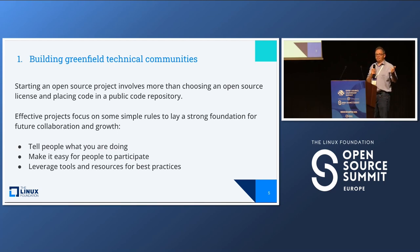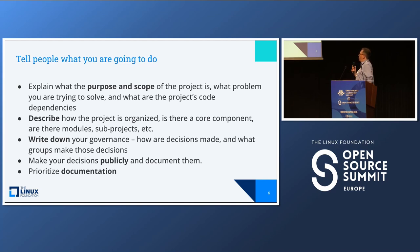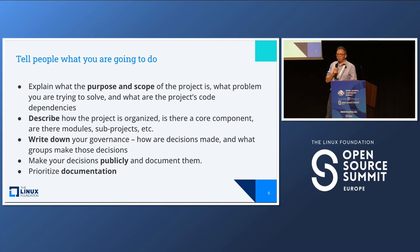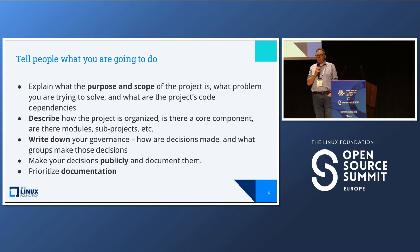First: tell people what you're doing. It sounds simple, but focusing on doing that in an easy and direct manner can be very helpful. Second: make it easy for people to collaborate. Third: leverage tools and resources for best practices. On telling people what you're going to do — explain the purpose and scope of the project. Have a README file in the repo that sets forth what you're interested in doing, what problem you're trying to solve, what the code dependencies are, what other projects you're leveraging. Describe how the project is organized — is there a core component, modules, subprojects?